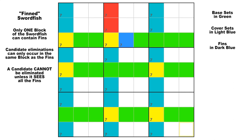Please note that if there are extra candidate 7s in any of the cover sets, like an extra one here or an extra one here, it doesn't change anything. In any fish pattern, the restrictions are only on the base sets. The base sets in a basic swordfish must contain either two or three instances of the fish digit, here being candidate 7. The cover sets can have the fish digit in all nine cells.